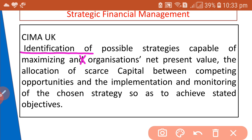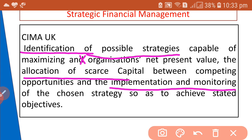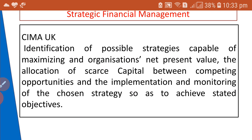So as per this definition, it involves: first, the identification of possible strategies to maximize NPV of the firm; second, the allocation of scarce capital between competing opportunities; and third, the implementation and monitoring of the chosen strategy to achieve organizational objectives. So Strategic Financial Management is about identification, allocation, implementation, and monitoring.